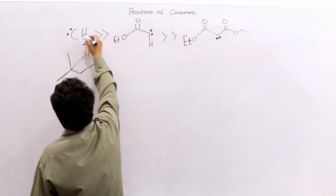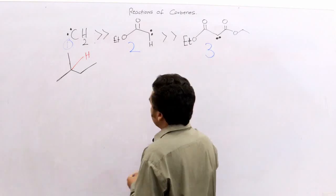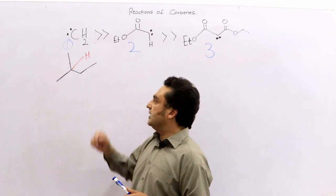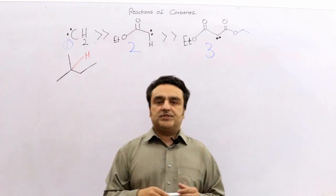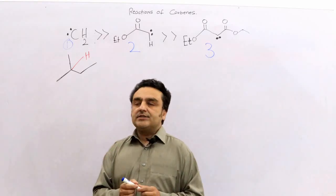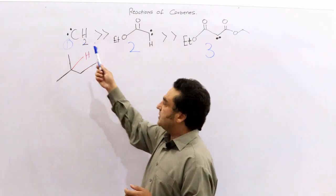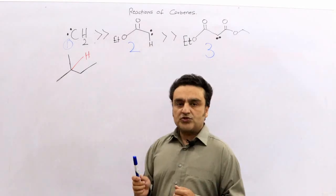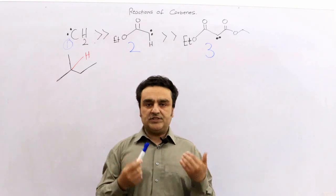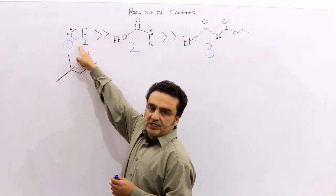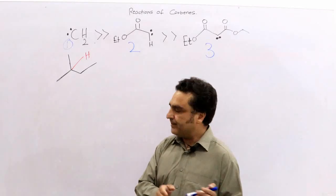This is one, this is two, and this is three. I have drawn the substrate here. These carbenes react differently with the substrate. Previously we discussed that the least selective is this one, this one is more selective, and this one is the most selective. The methylene carbene is blind and it can be added to any of the C-H bonds.